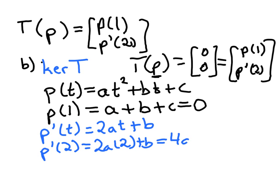Then p'(2) is 2a×2+b, so 4a+b would need to also equal 0. So sticking with that equation, this tells us that b would need to equal -4a. If this polynomial p is in the kernel, then b needs to equal -4a.